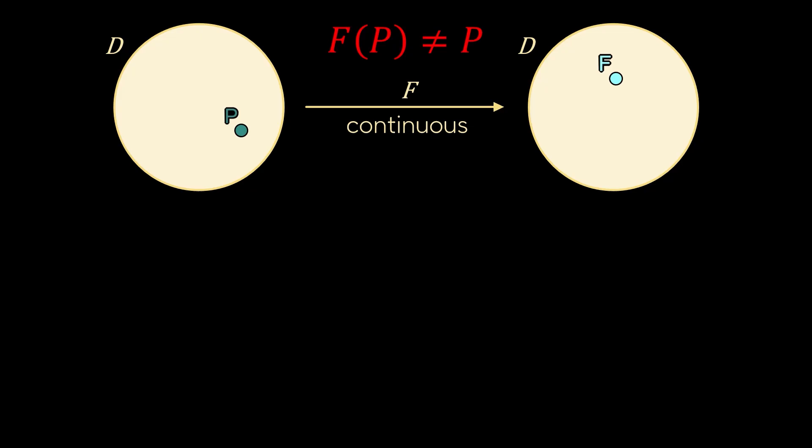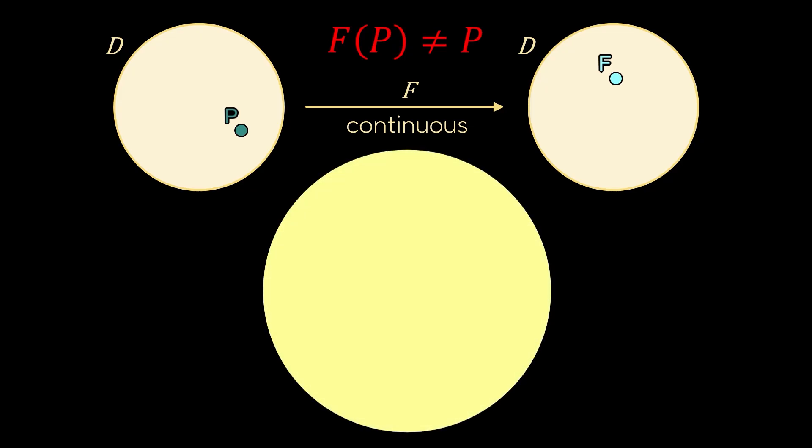Now take a third copy of the disk and plot on it both P and F(P). Since they are distinct, we can draw the ray that starts from F and passes through P. Thanks to the convexity of the disk, this ray will meet the boundary of the disk at a point Q, which depends on P.